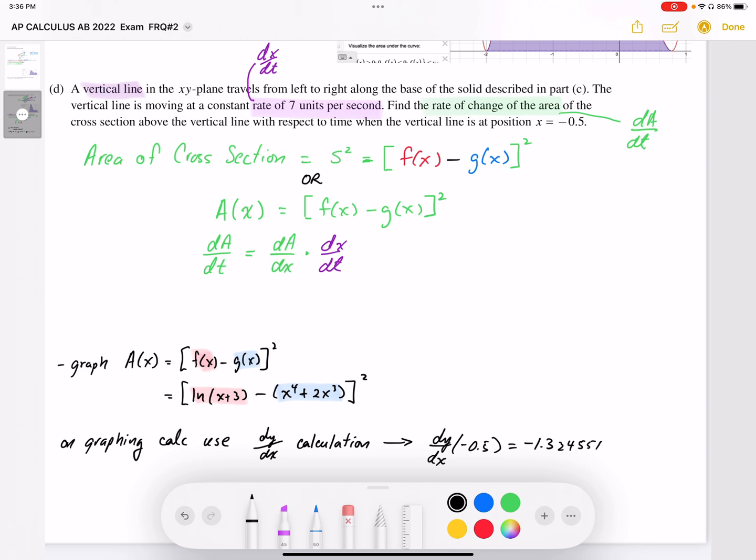So that's the value of the slope. And this is A prime at negative 0.5, because that value is a prime. So negative 1.324551. So I have that value.